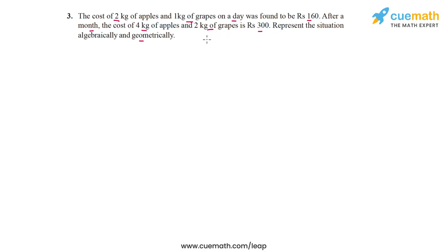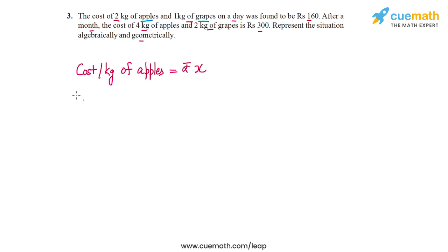The unknowns in this situation are the cost per kg of apples and the cost per kg of grapes. Let's assume that the cost per kg of apples is rupees x and the cost per kg of grapes is rupees y. So the two variables are x and y.